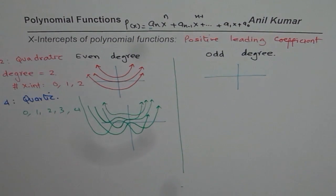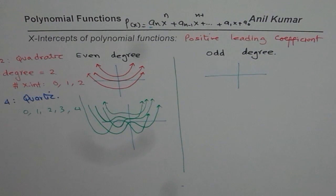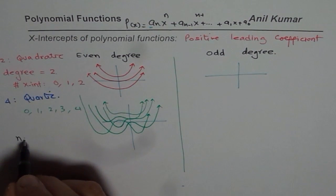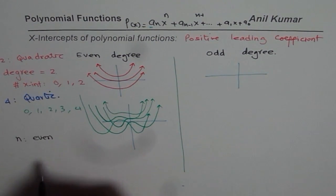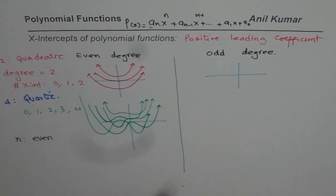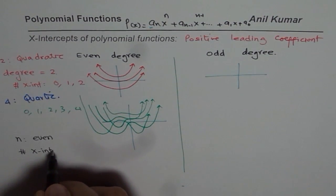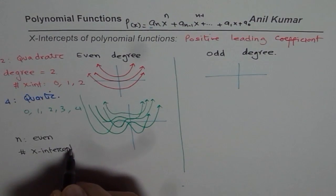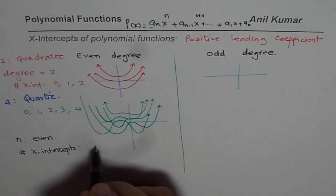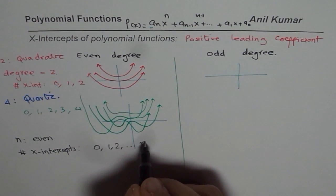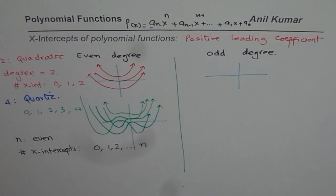What we observe here is that if the degree n is even, the number of x-intercepts could be 0, 1, 2, up to n. So these are the possibilities for even degree polynomials.